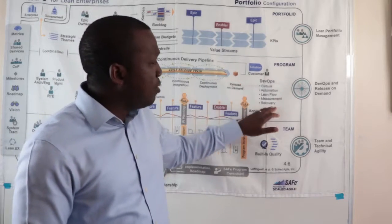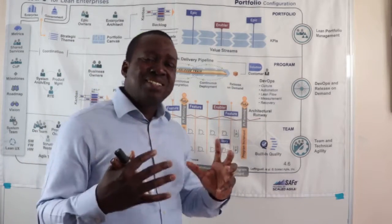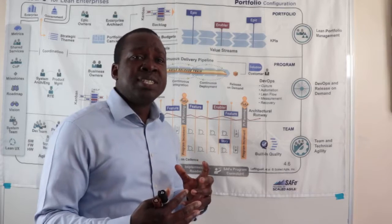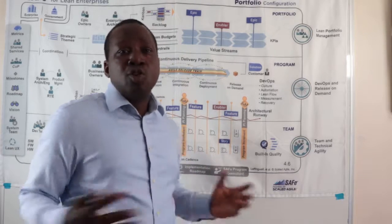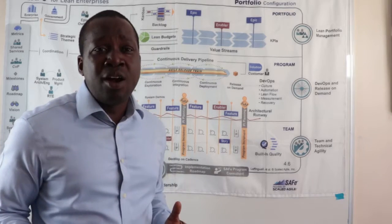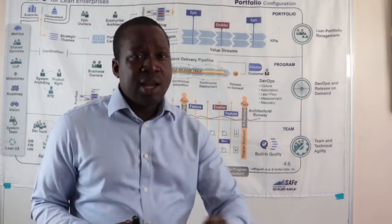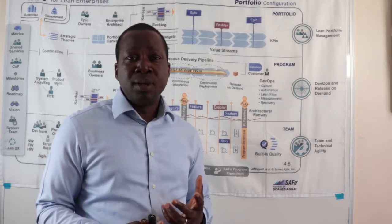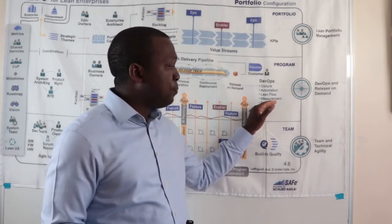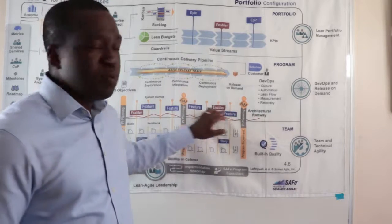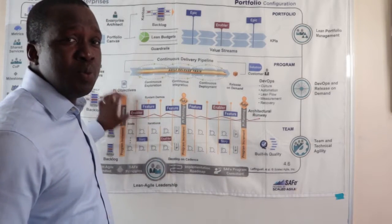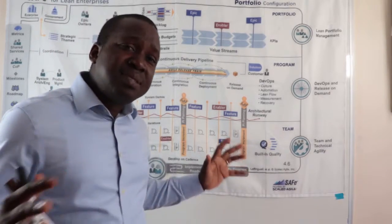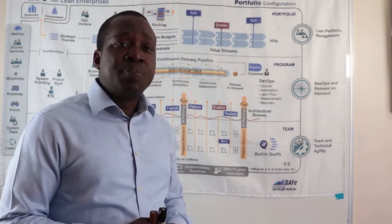We've got DevOps — the CALMR approach: a mindset of improvement, automation, measuring our processes and then recovering. Nobody wants to work in an unstable environment, and nobody wants to deliver an outcome to the customer that causes their environment to become unstable. So we want to make sure that we can easily recover. We maintain the architectural runway at the program level with the support of the Systems Architect and the systems team, and the teams are all aligned to delivering those particular outcomes.